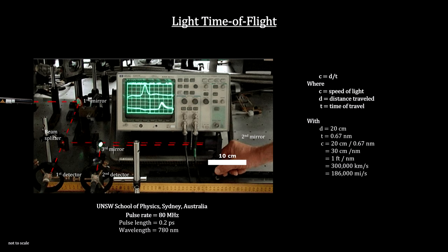The pulse on the trace arrives earlier by 0.67 nanoseconds with respect to the first, giving us the value for the speed of light, c equals thirty centimeters per nanosecond.